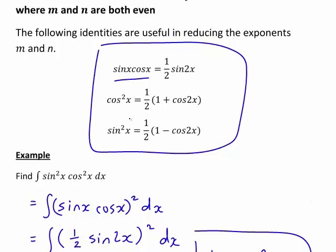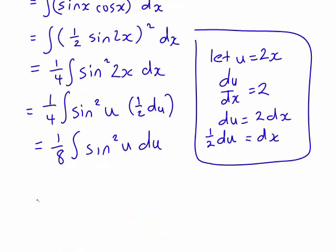At this stage we can just go back a step, and we see that sine squared x can be rewritten as a half times 1 minus cos 2x. Therefore, sine squared u will just be 1 half times 1 minus cos 2u. Writing that in, this becomes 1 eighth times the integral of 1 half, 1 minus cos 2u du.